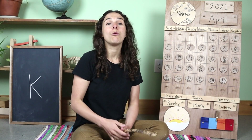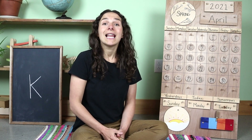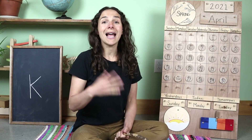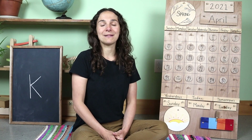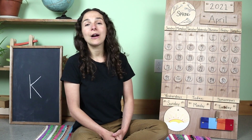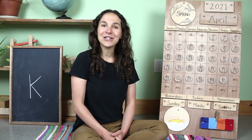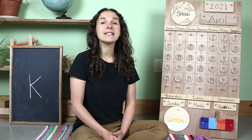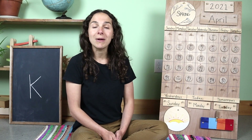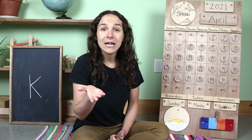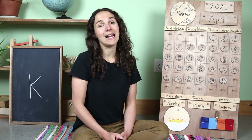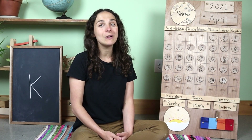Friends, in four days we will begin a brand new month. Listen carefully to the words in this next song and notice what month comes after April. It goes like this: January, February, March and April, May and June, July and August, September, October, November, December — 12 months in a year. Did you hear what month comes after April? May! May is the next month, and it will be here in just a few days.